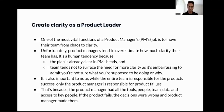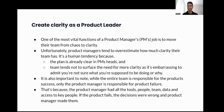So how can you create clarity as a product leader? One of the most vital functions of a PM's job is actually to move their team from chaos to clarity. Unfortunately, we as product managers usually tend to overestimate how much clarity our team has, and it's usually because of human tendency. As product managers, the plan is clear in our heads, and our teams tend not to surface the need for more clarity as it can get embarrassing to admit you have no idea what you're supposed to be working on. While the entire team is responsible for product success, only the product manager is responsible for the product's failure — because you as a product manager had all the tools, people, teams, and resources in place, and the decisions you made led the product to fail.